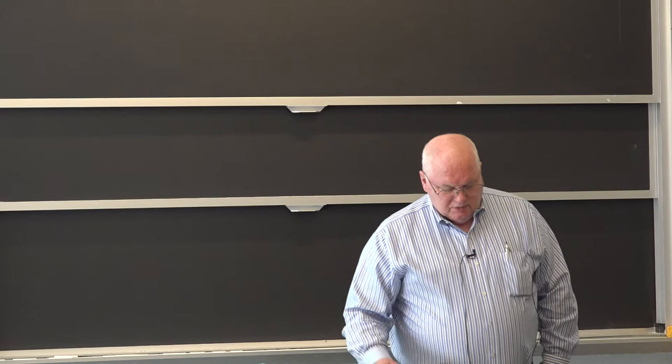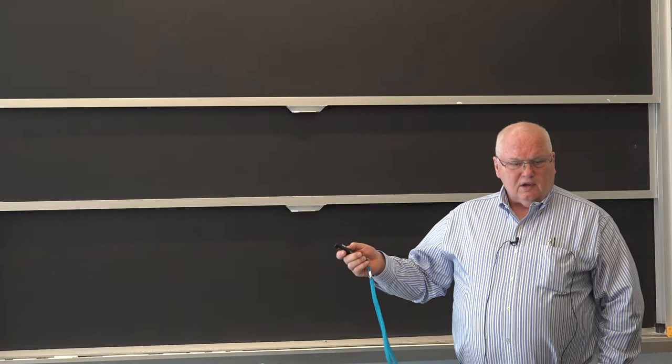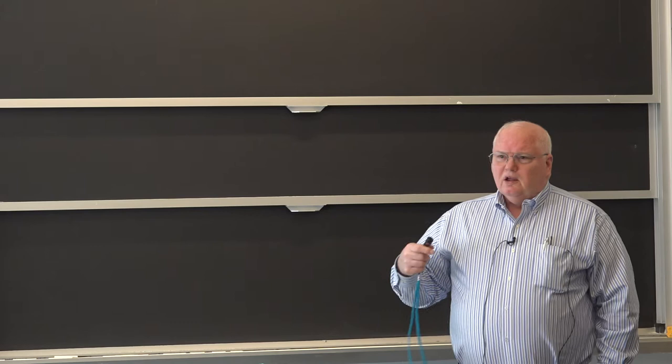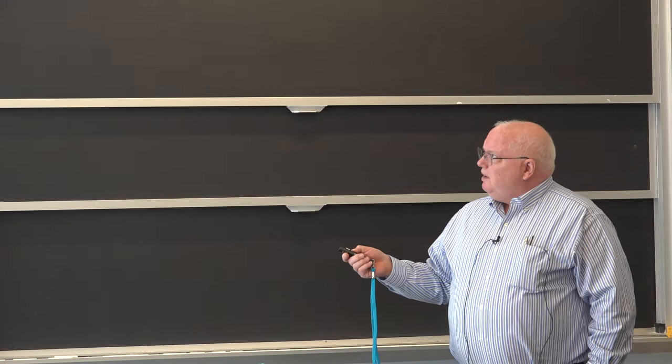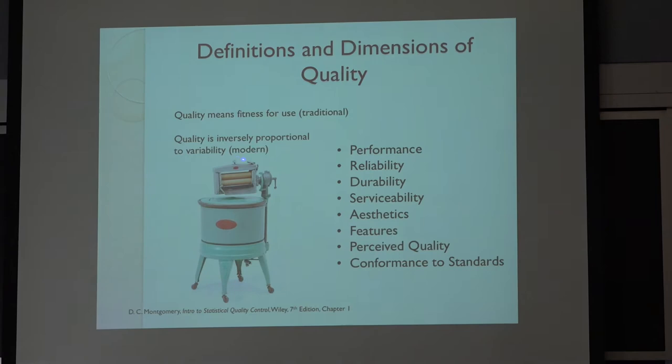Montgomery talks about what quality is. Traditionally, quality meant fitness for use or fitness to a standard. But quality is inversely proportional to variability. This is a modern definition of quality from a statistical point of view. You want to reduce the variability in your manufacturing process.